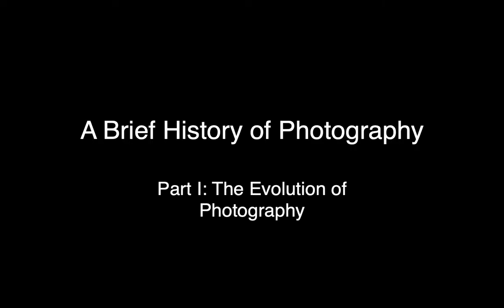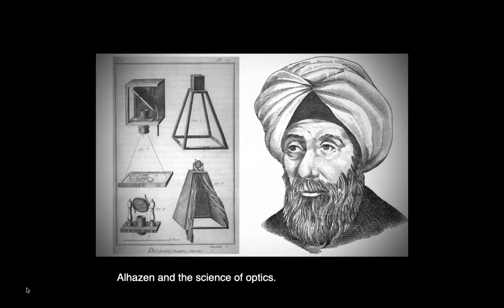The principle behind photography is optics, the science of light, and it dates back to ancient China. In the early 5th century, the Chinese philosopher Mo Ti observed that light passing through a pinhole opening in a darkened chamber forms an exact view of the world outside, but upside down. The Greek philosopher Aristotle observed this same phenomenon, but it wasn't until the 11th century that an Arab mathematician named Alhazen actually set up some experiments to answer the question of why this phenomenon occurs.